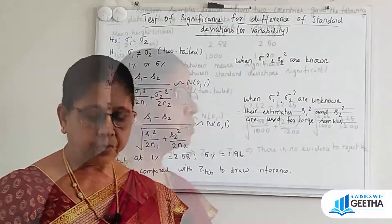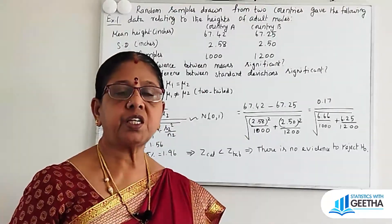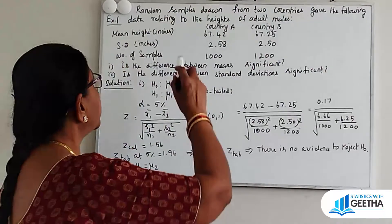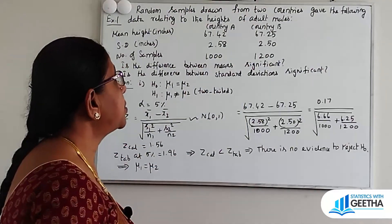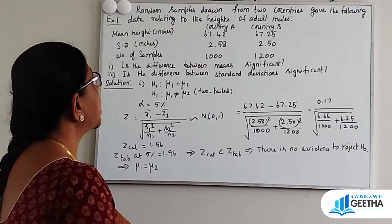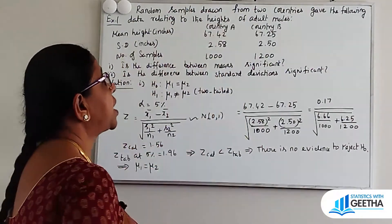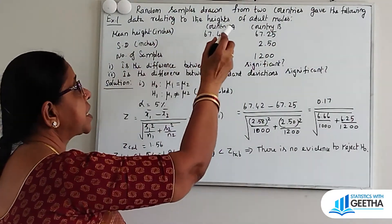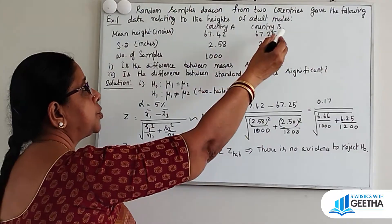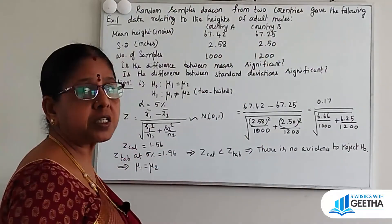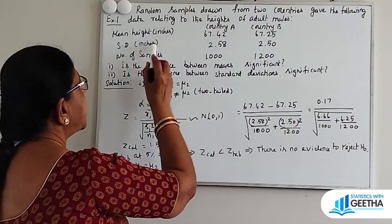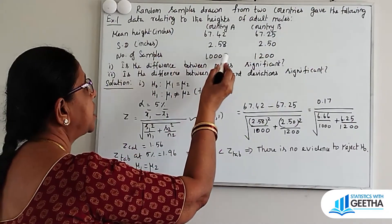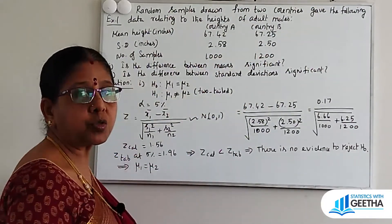Now we are going to see the example problems. Example 1: Random samples drawn from two countries gave the following data relating to the heights of adult males. Mean height in inches: Country A = 67.42, Country B = 67.25. Standard deviation: Country A = 2.58, Country B = 2.50. Number of samples: Country A = 1000, Country B = 1000.